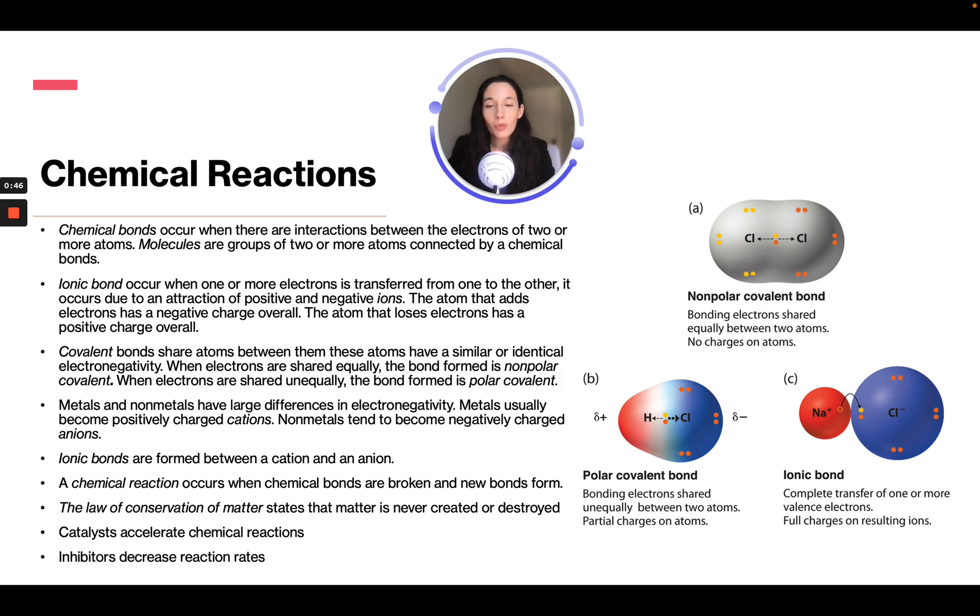Covalent bonds share atoms between them. These atoms have a similar or identical electronegativity. When electrons are shared equally, the bond formed is nonpolar covalent. When electrons are shared unequally, the bond formed is polar covalent.